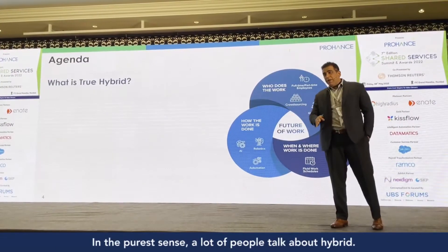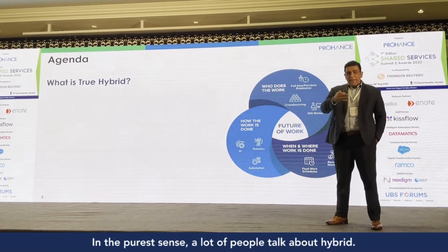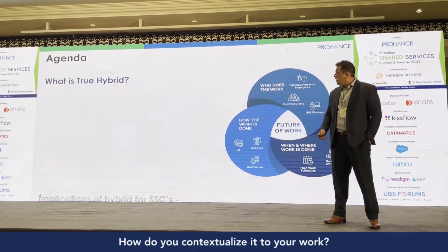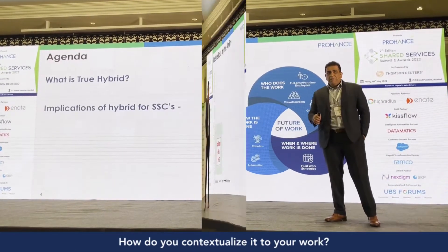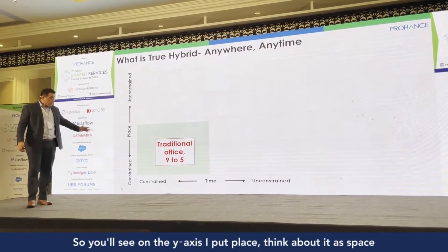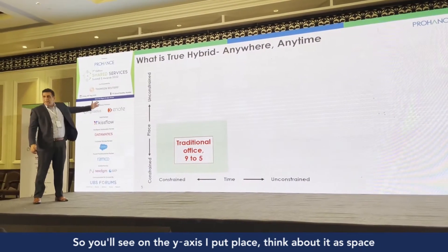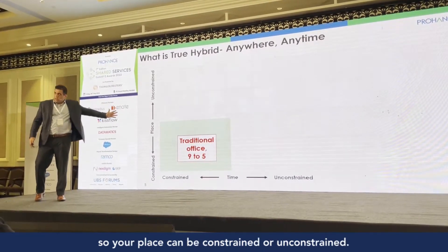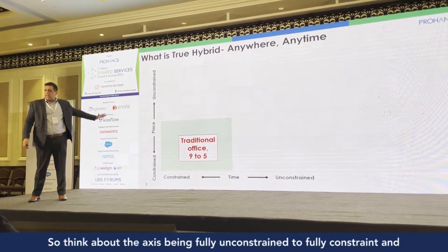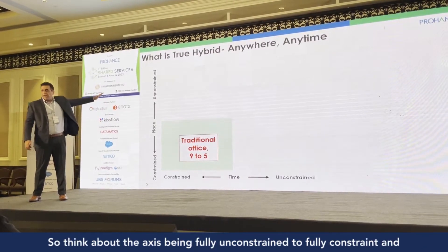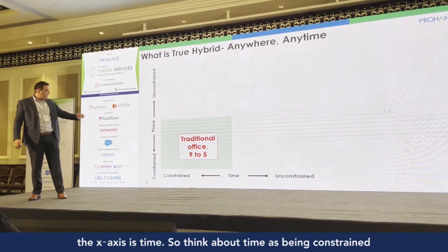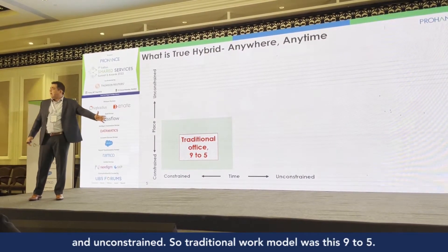What is true hybrid? In the purest sense, a lot of people talk about hybrid — what is hybrid, what does it mean, how do you apply it, how do you contextualize it to your world? I want to start with this framework and build on it. On the Y-axis I put place — think about it as space. Your place can be constrained or unconstrained. The X-axis is time, also constrained or unconstrained.